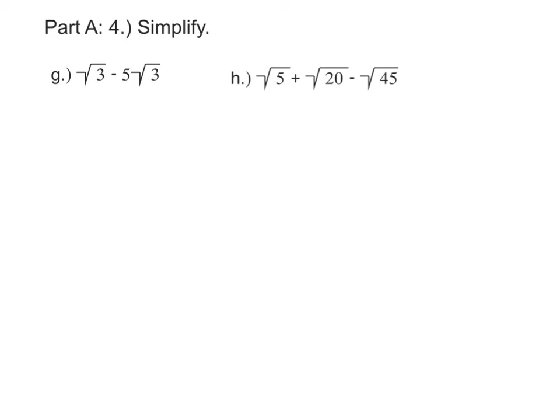In this next set, what we need to do is combine like radicals. In part G, we have one square root of three, and we're going to subtract five square roots of three. So one minus five is negative four square roots of three.